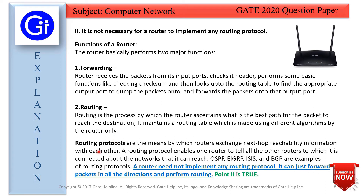Routing protocols are the means by which routers exchange next-hop reachability information with each other. A routing protocol enables one router to tell all connected routers about the networks it can reach, and is used to find the best path. Examples include OSPF, EIGRP, IS-IS, and BGP. However, without a routing protocol, a router can still forward packets using the forwarding mechanism. Therefore, a router need not implement any routing protocol — Statement 2 is true.